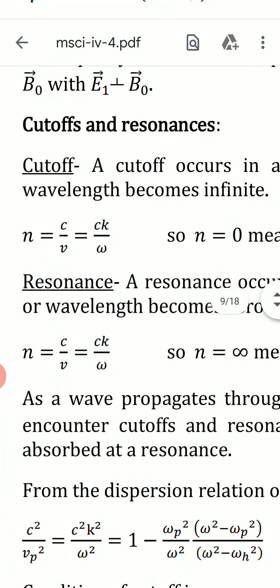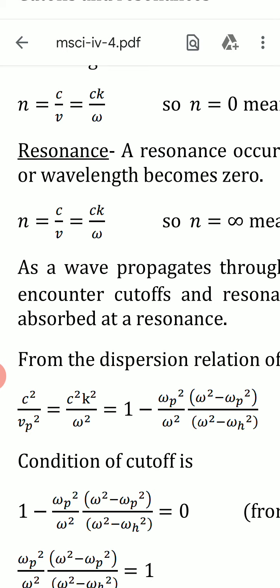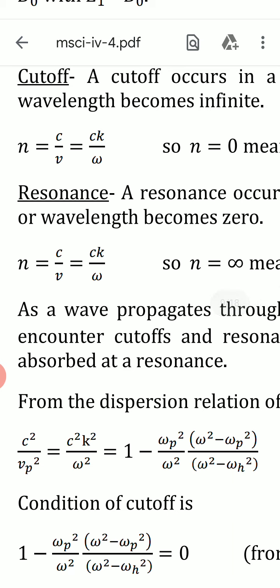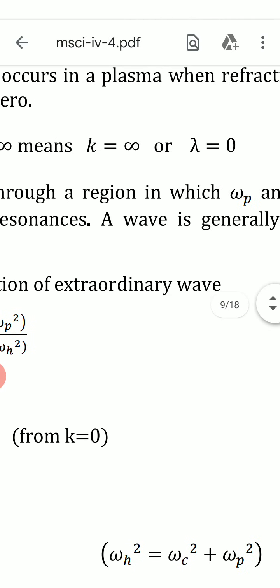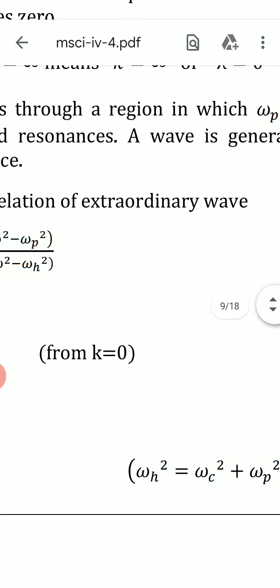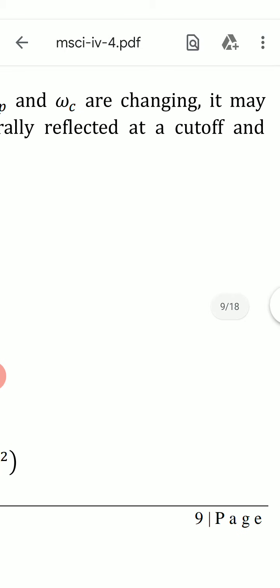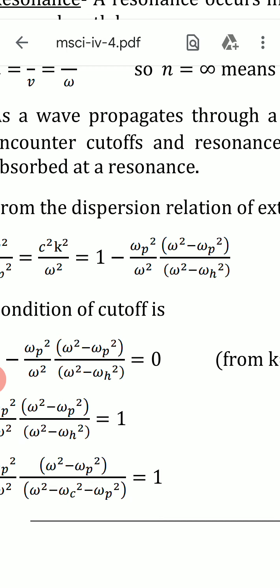To summarize the two conditions: for cutoff, refractive index n = 0; for resonance, refractive index n = infinity. As a wave propagates through a region in which ωp and ωc are changing, it may encounter cutoffs and resonances. A wave is generally reflected at a cutoff and absorbed at a resonance.